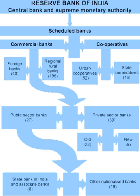Its proprietors were the owners of the earlier commercial bank and the Calcutta bank, who by mutual consent created Union Bank to replace these two banks. In 1840 it established an agency at Singapore, and closed the one at Mirzapur that it had opened in the previous year. Also in 1840 the bank revealed that it had been the subject of a fraud by the bank's accountant. Union Bank was incorporated in 1845 but failed in 1848, having been insolvent for some time and having used new money from depositors to pay its dividends. The Allahabad Bank, established in 1865 and still functioning today, is the oldest joint stock bank in India, though not the first. That honour belongs to the Bank of Upper India, which was established in 1863 and survived until 1913, when it failed, with some of its assets and liabilities being transferred to the Alliance Bank of Simla.